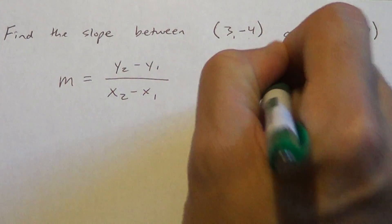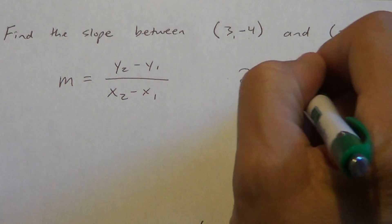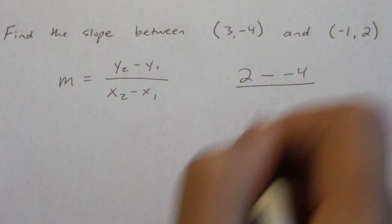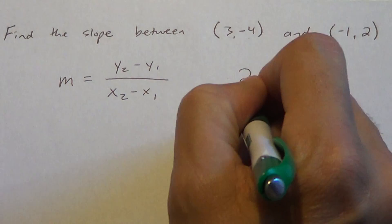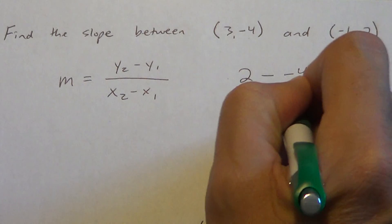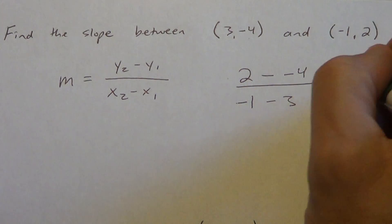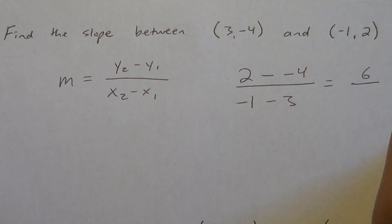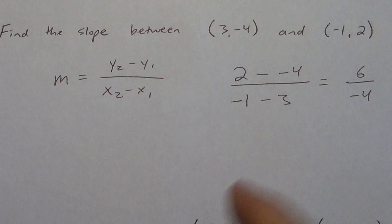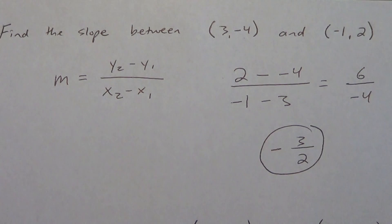So we're going to put the second y value first. So 2 minus the first y value, which is negative 4, over negative 1 — the second x value — minus 3. 2 minus negative 4, we treat that as a plus, so 2 plus 4 is 6. Negative 1 minus 3 is negative 4. A positive divided by a negative is a negative.